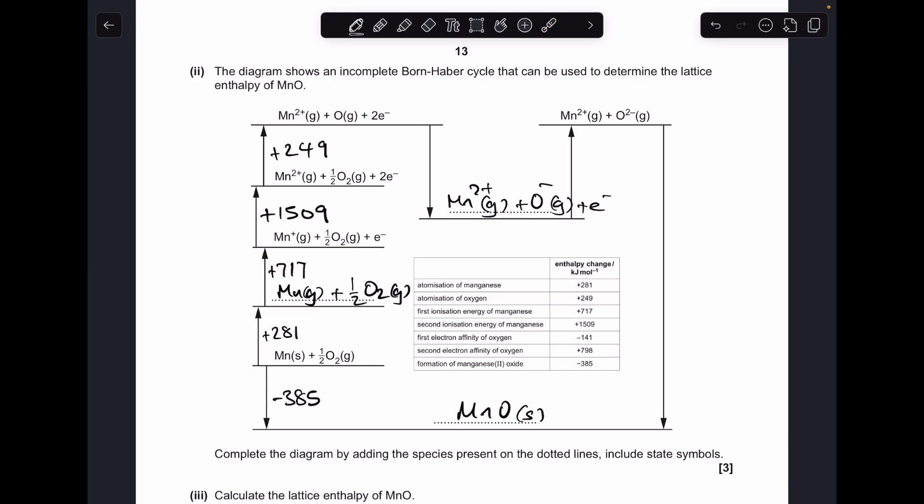And then the up arrow, going from O⁻ gas plus an electron to O²⁻ gas, is the second electron affinity. So that's +798.